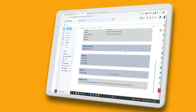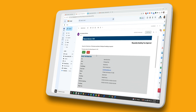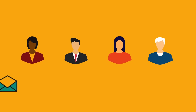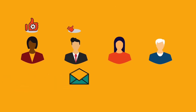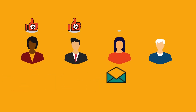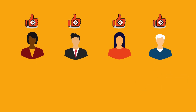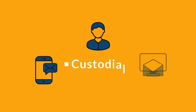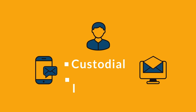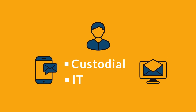They can approve or deny the request directly from the email or log into the system to respond there. If multiple approvals are needed, the request automatically goes down the designated chain until final approval is given. The system also notifies any necessary support staff, like custodial or IT, about the booked space so they're in the loop and prepared.